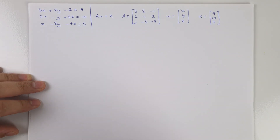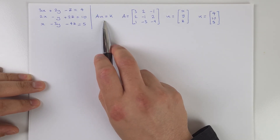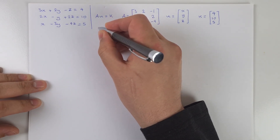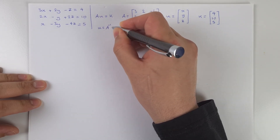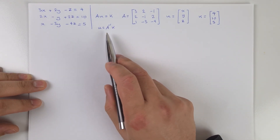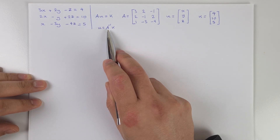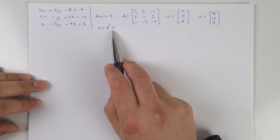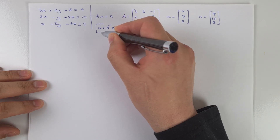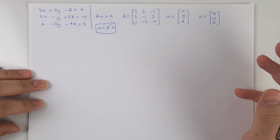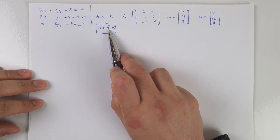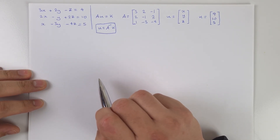The reason we're doing this is so that we can set up and solve this linear equation. To solve for u, we rearrange so that u becomes the subject: u equals A inverse multiplied by k. The reason we're multiplying by A inverse is because A is a matrix. In normal algebra, if you were dealing with numbers, you could simply divide both sides by A — but because A is a matrix, you can't divide by matrices, you have to multiply by the inverse. That gives us the equation we need to solve.